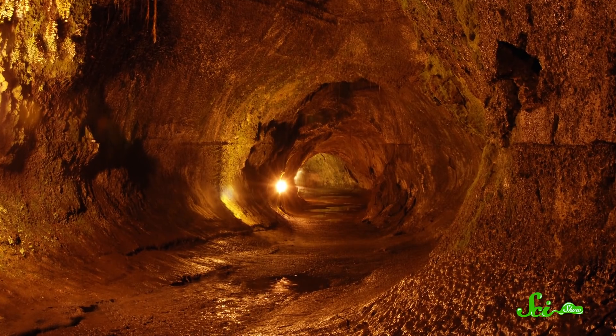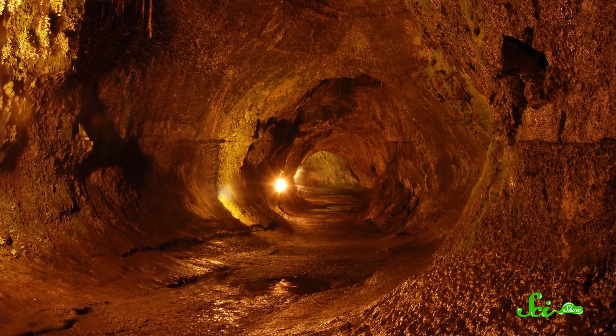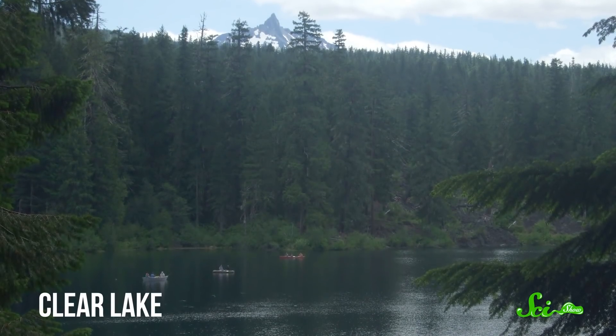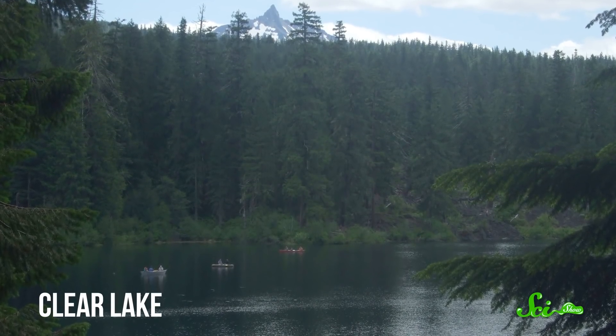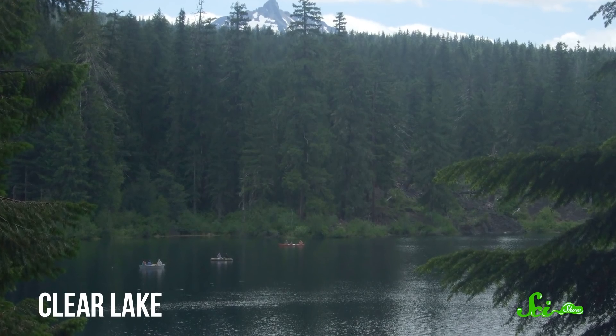That drains the tube and leaves behind a hollow channel. The lava tube under the Lost Lake formed over 12,000 years ago, and it carries water from the lake into the Mackenzie River. From there, it ends up more than 9 kilometers from where it started in Oregon's Clear Lake.